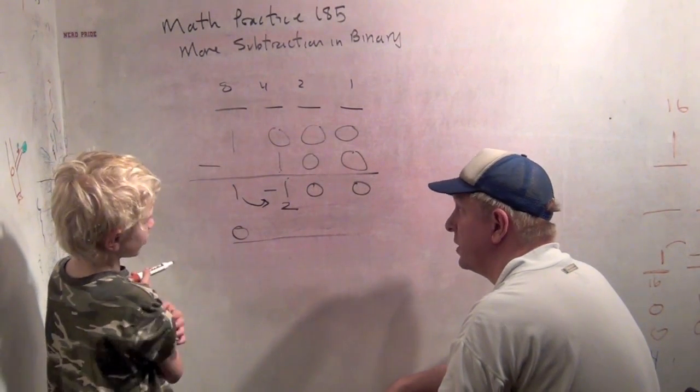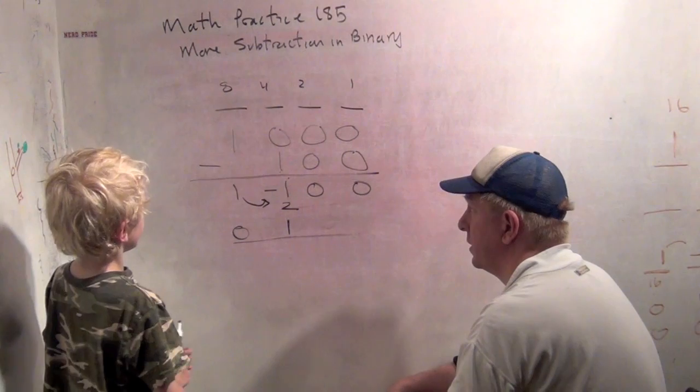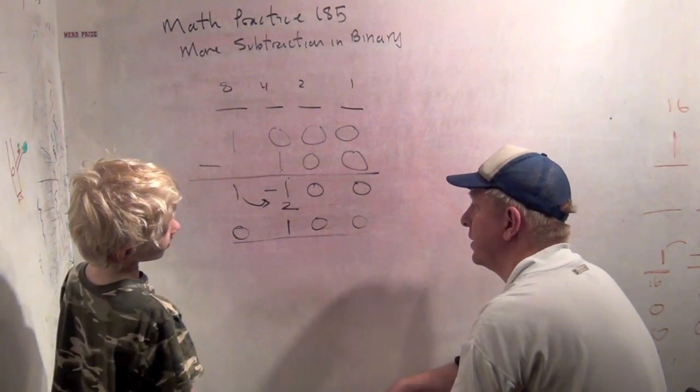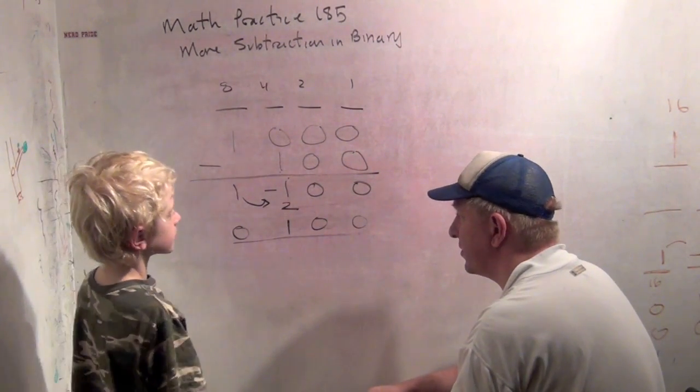Because it's two minus one, which is one. And then we get zero, one, zero, zero, which is four. And is eight minus four equal to four? Yeah. All right. So there's our subtraction.